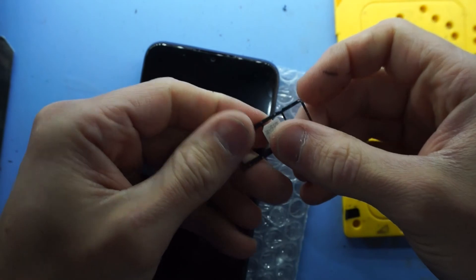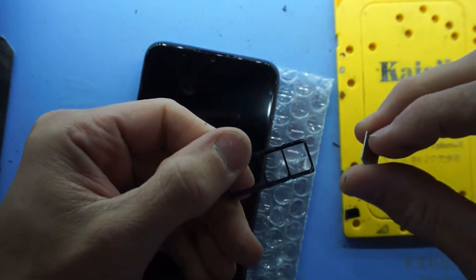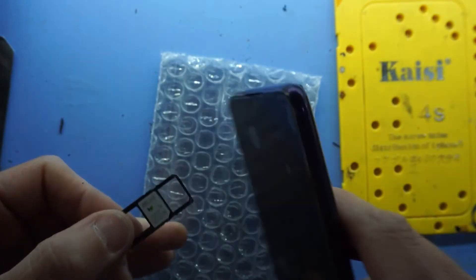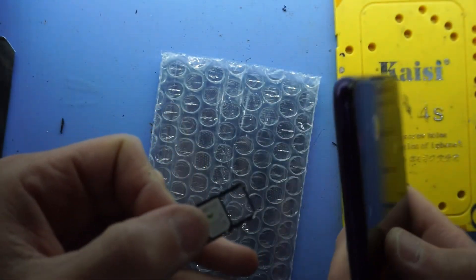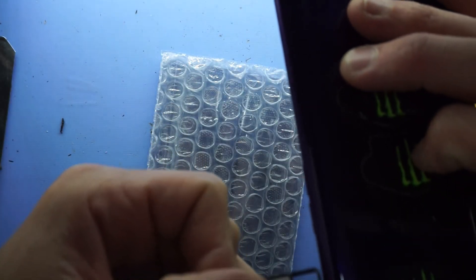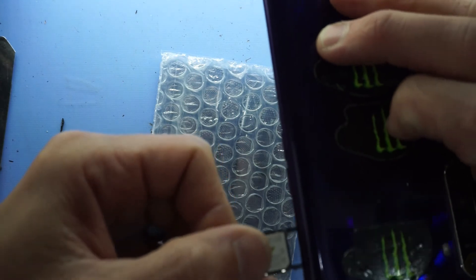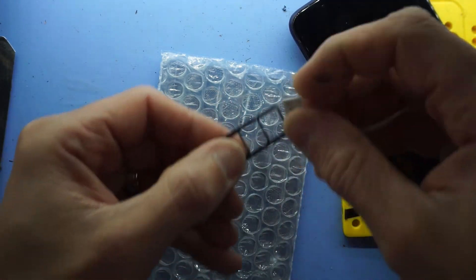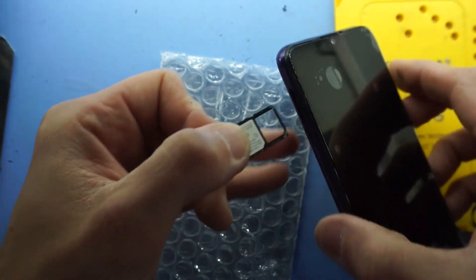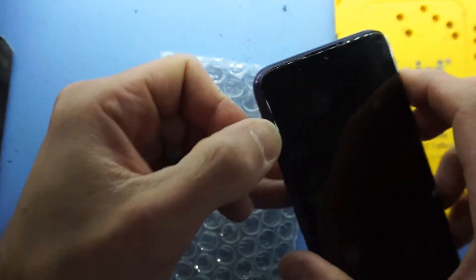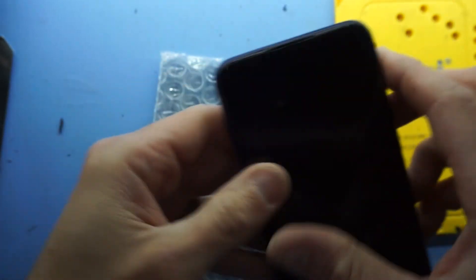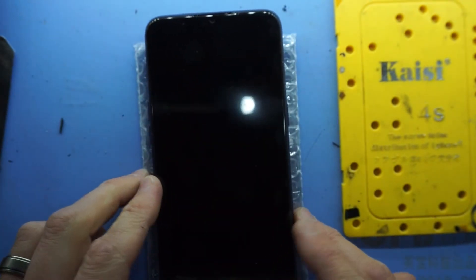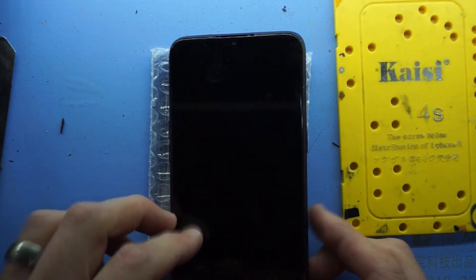From there, put the SIM tray and SIM back in. Upside down. There we go. That's how to replace the display on your Oppo Realme 5.